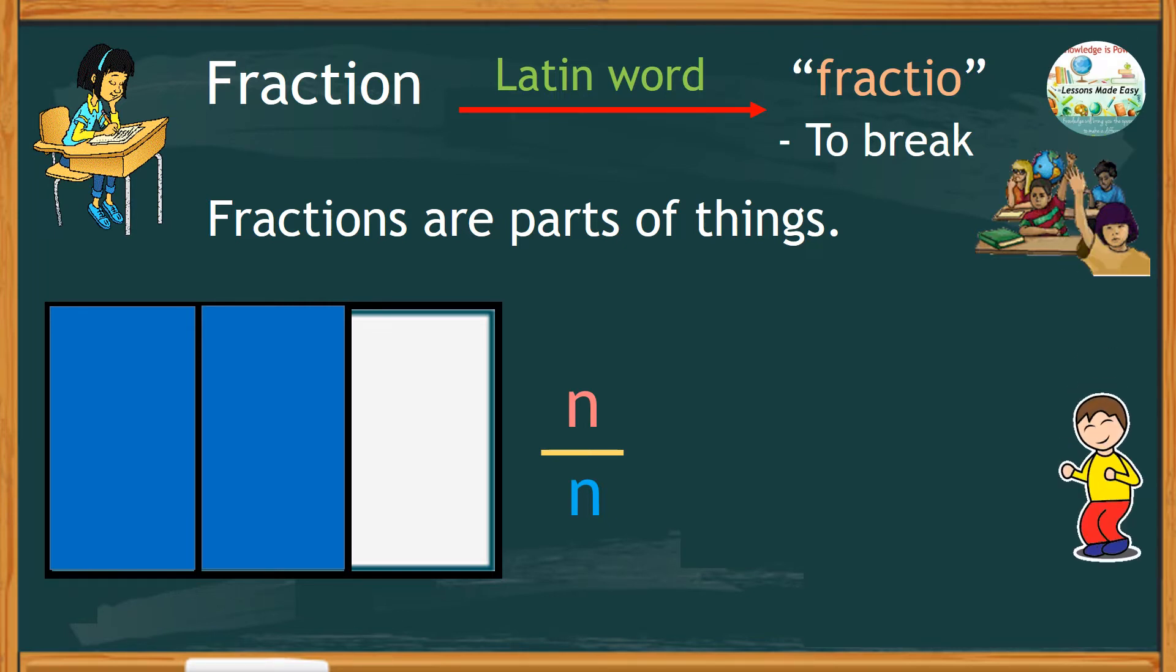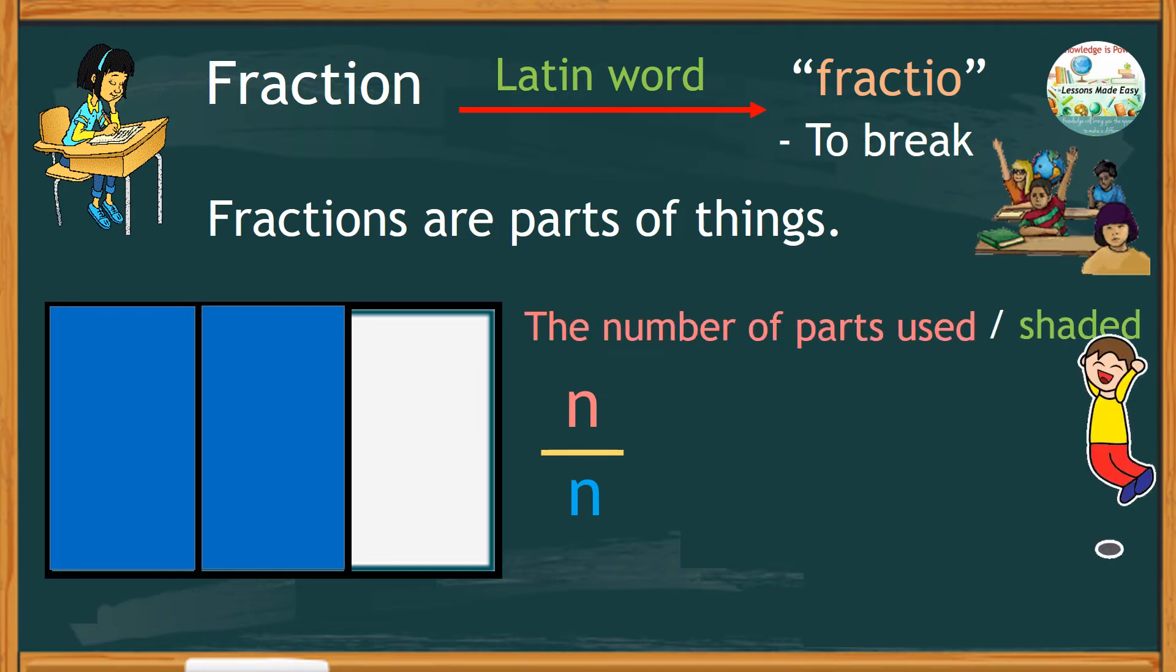The number on the top must be the number of parts used or shaded. In this example, there are two parts shaded. And we call this the numerator.